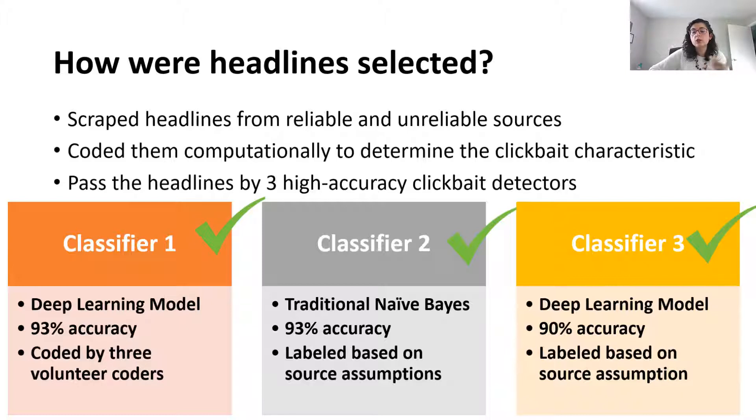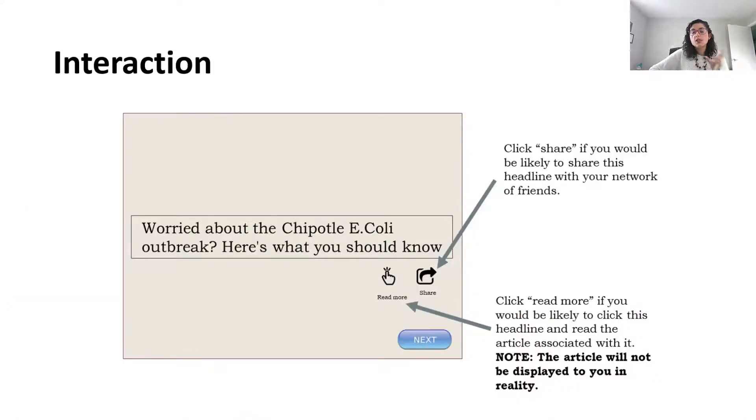So how did that interaction look like for participants? For each headline, participants had the option to click on read more if they would be likely to read the article further, or share if they would be likely to share the article with their network of friends. And the same interaction was completed for the seven clickbait and non-clickbait headlines.